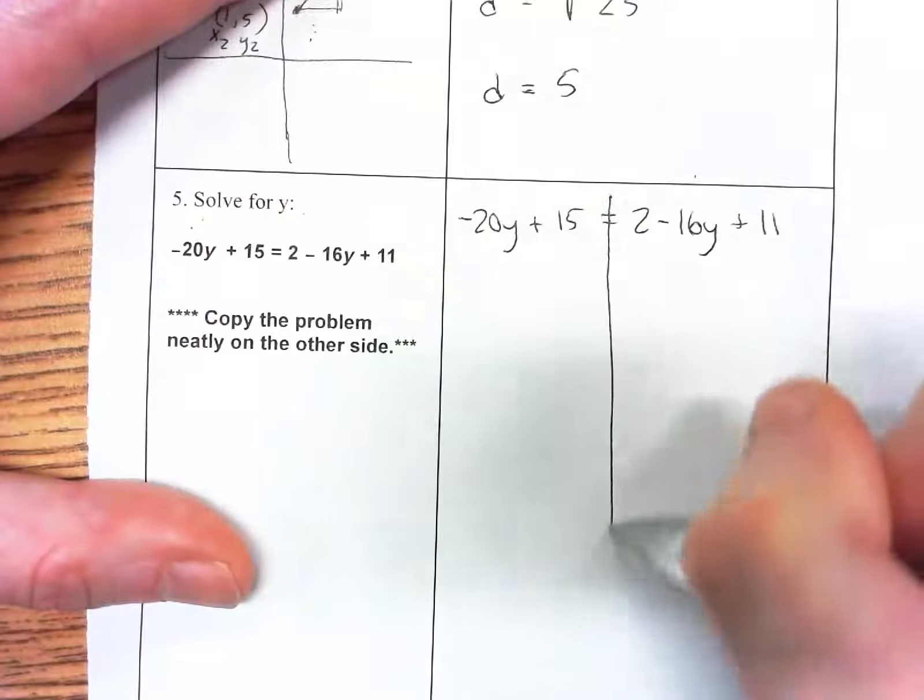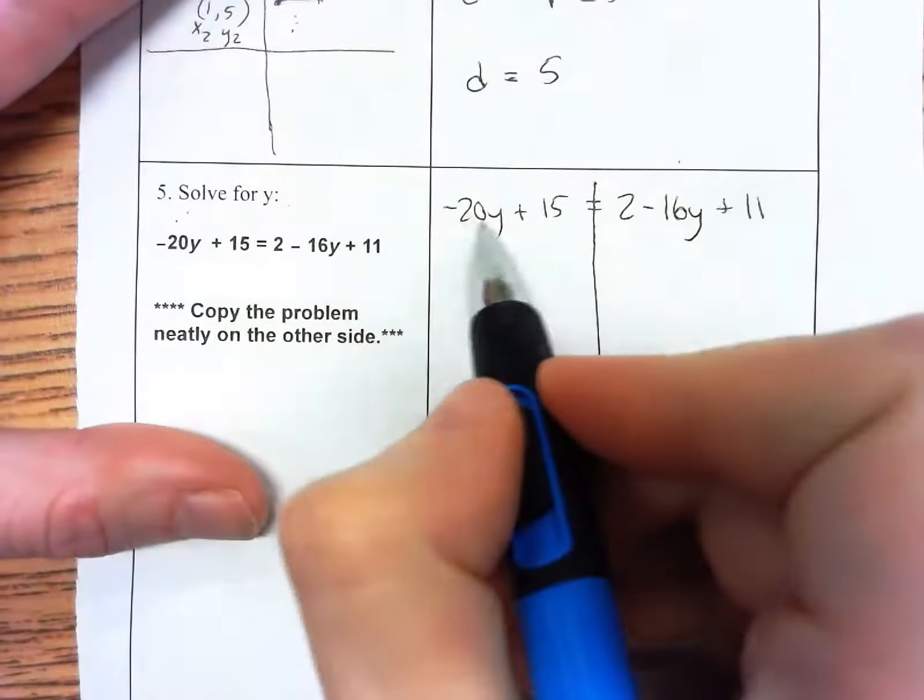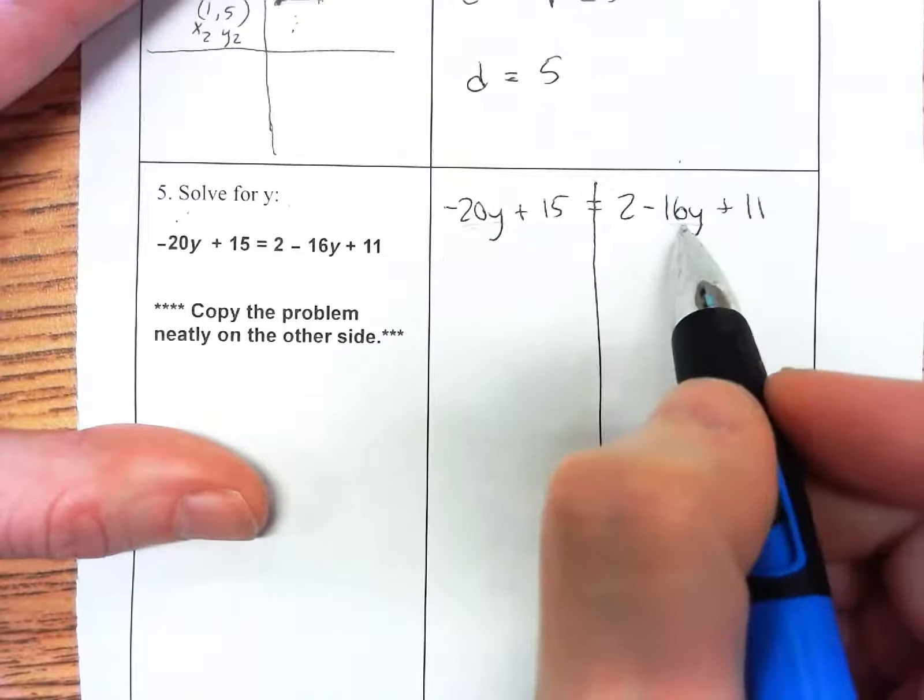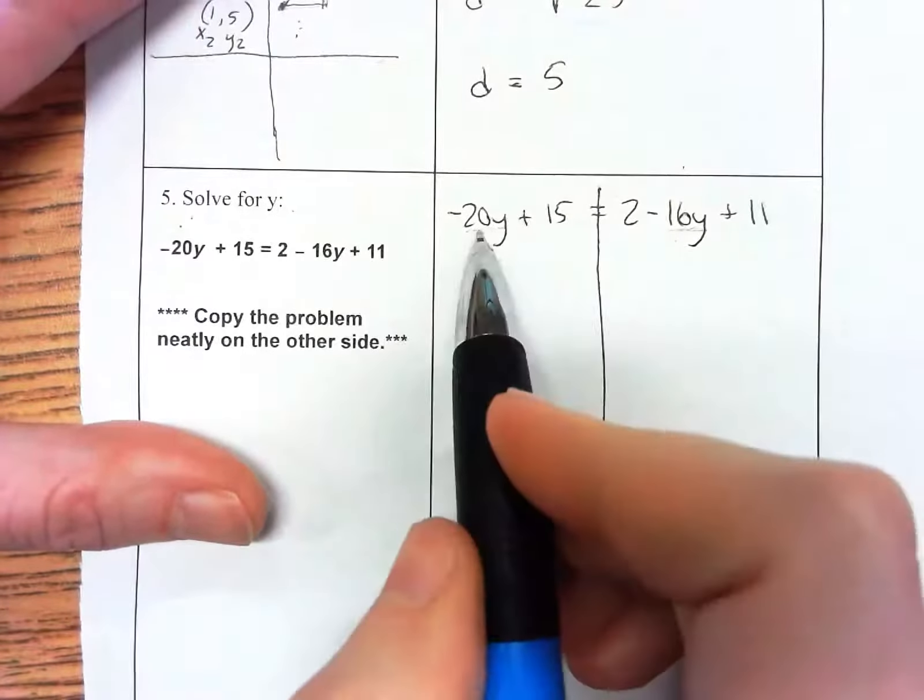I'm going to draw my line through the equal sign so I can keep things on the right sides. We have two terms that have y in them: negative 20y and negative 16y. I want to combine those so I can get them together.